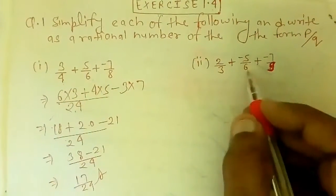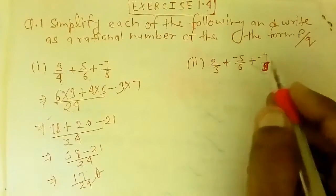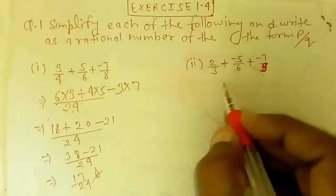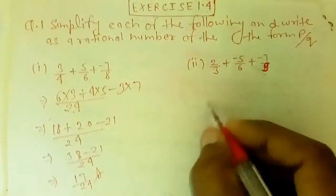2 by 3 plus minus 5 by 6 plus minus 7 by 9. 3, 6, 9 - LCM is 18.